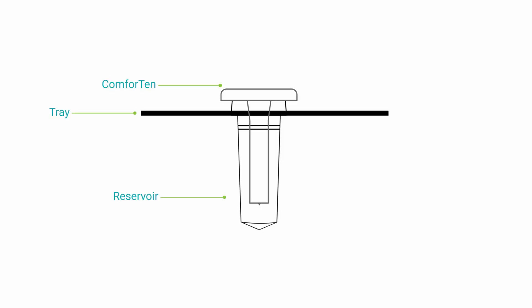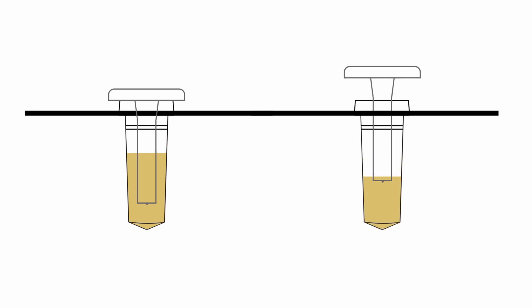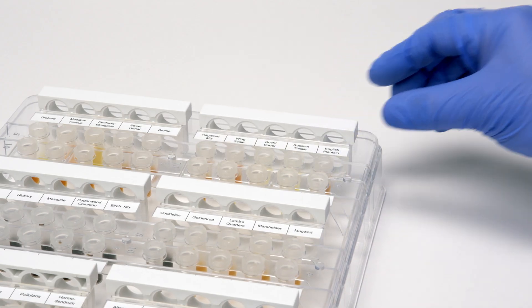The optional spacers allow for 20 drops of antigen versus 12 drops without the spacers. This means you can administer more tests between fillings. Unused spacers can be stored in the slots provided on the tray.